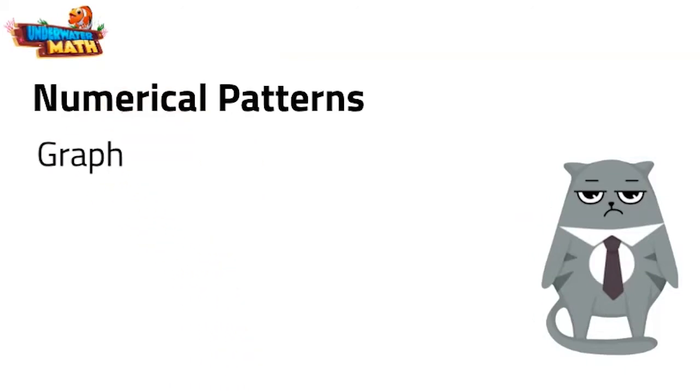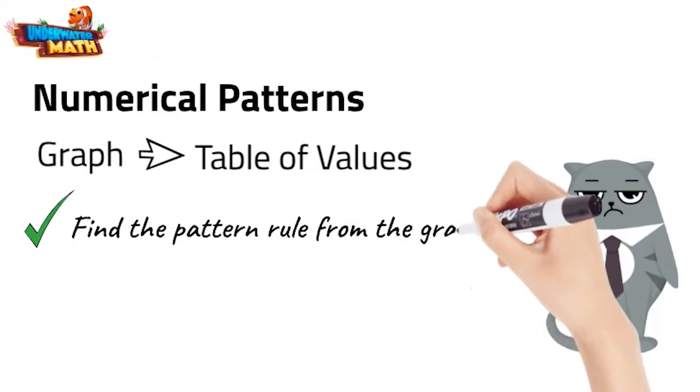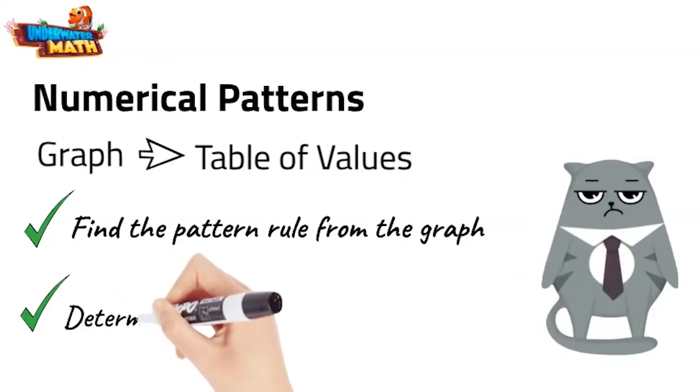And when we are given a graph for a numerical pattern, how do we find the correct table of values represented by the relationship between x and y? We have to find the pattern rule from the graph first. Then we determine which table represents the rule.